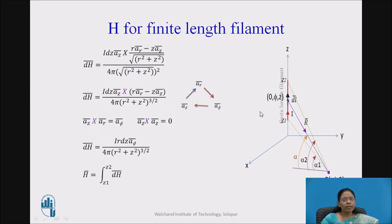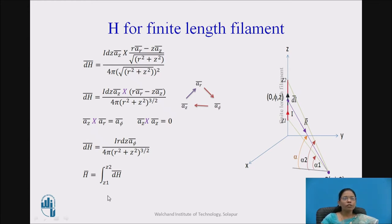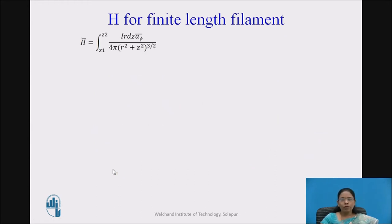This expression is for a small length of the filament. To find H-bar for the entire finite length filament ranging from Z1 to Z2, we integrate: H-bar equals the integral of DH-bar from Z1 to Z2. This contrasts with the infinite length filament where the limits were minus infinity to plus infinity. Substituting the expression for DH-bar, we get H-bar equals IR A-phi upon 4 pi times the integral from Z1 to Z2 of dZ divided by (R-squared plus Z-squared) raised to 3/2.